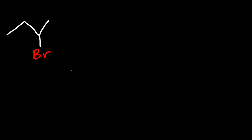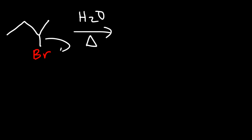Now let's say we have 2-bromobutane and we wish to react it with water and heat it as well. Draw the major E1 product and identify any other E1 products that can be produced in this reaction. We know the first step is that the leaving group is going to leave, so we're going to get a secondary carbocation.